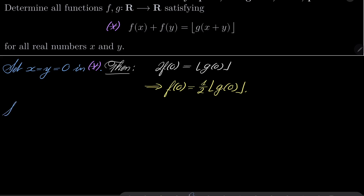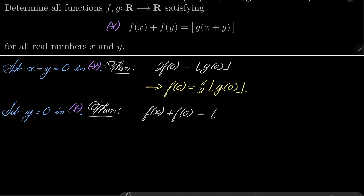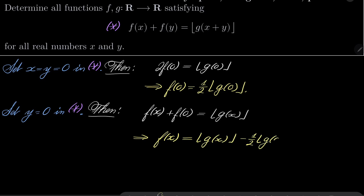Now let's set just y to be 0 in our condition asterisk. We get f(x) + f(0) equals floor of g(x). But f(0) is one half floor of g(0), so we have f(x) equals floor of g(x) minus one half floor of g(0).